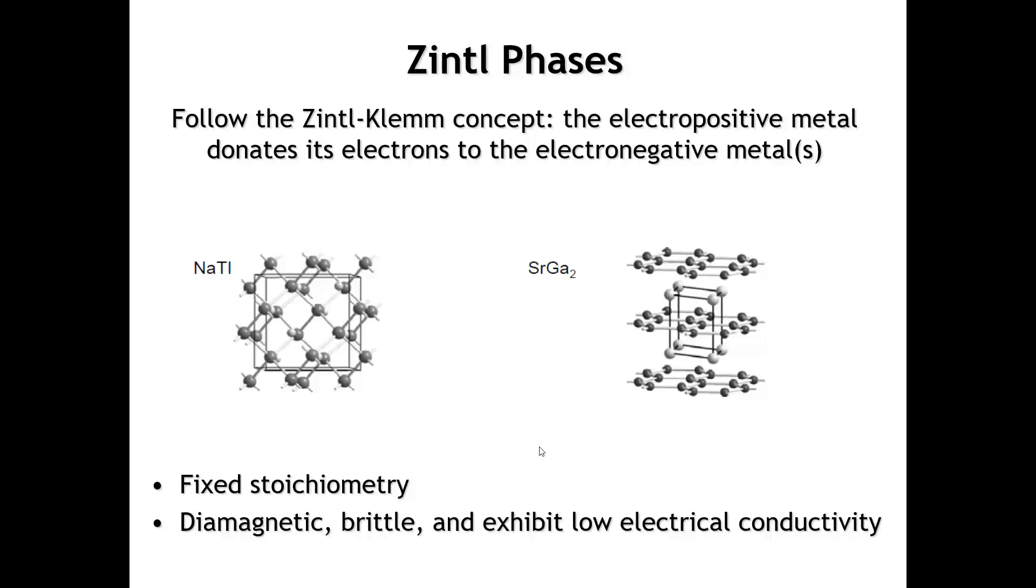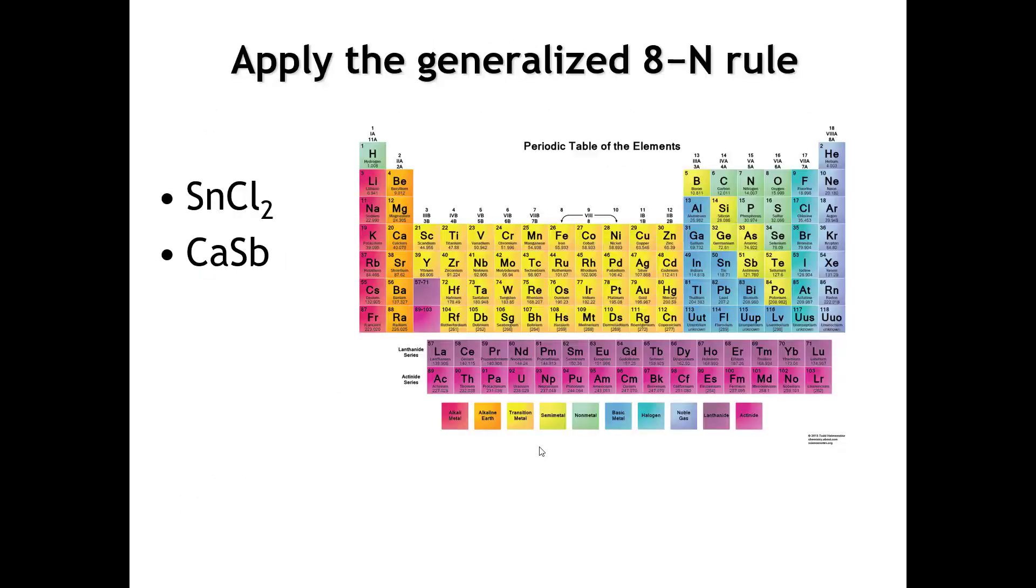Let's finish by you doing a couple of examples. Here are two compounds, tin-two chloride and calcium antimonide. I'd like you to apply the generalized 8-N rule and tell me what you find in these compounds. Are there cation-cation bonds, anion-anion bonds, cation-lone pairs? What's going on in these compounds? We'll pause the video. You work out your answers, and then come back and we'll go over them.